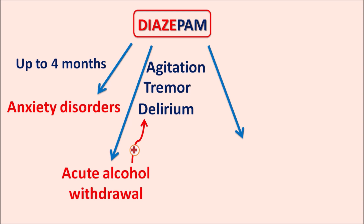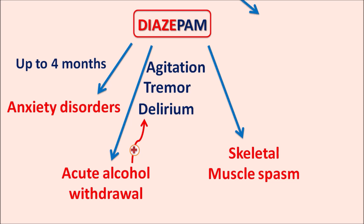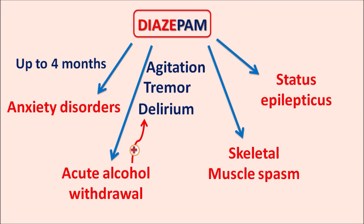Diazepam produces skeletal muscle relaxation, so it can be used in skeletal muscle spasm — again for short-term relief. Reflex spasms can be treated by diazepam, and syndromes such as stiff-man syndrome, where local reflex of skeletal muscle produces spasm, can be treated with diazepam to relieve the muscle spasm. The fourth clinical indication is treatment of status epilepticus, where uncontrolled convulsions are observed and can be controlled by diazepam.